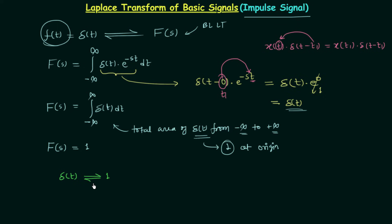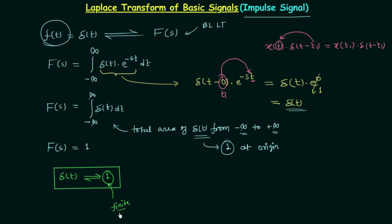Now we will find the region of convergence (ROC) for the Laplace transform of δ(t). Using the definition of ROC — the region in the S-plane where the Laplace transform is finite — in this case F(s) = 1, which is always finite. Therefore the region of convergence is the entire S-plane, because for all values of σ we get a finite Laplace transform.